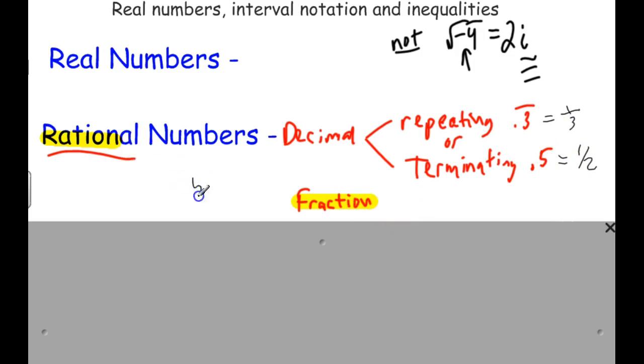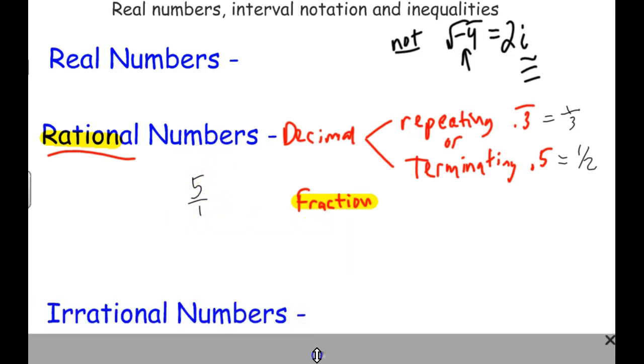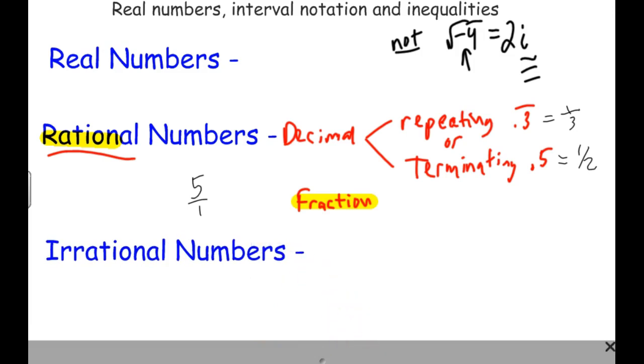So even the number like 5, right? 5 over 1 is 5, so that's rational. Irrational is a number. You can talk about it two different ways. Again, we could call that, let's talk about the decimal first.